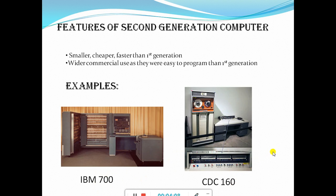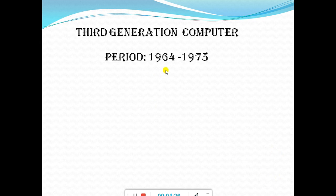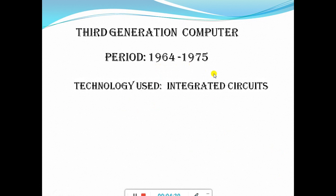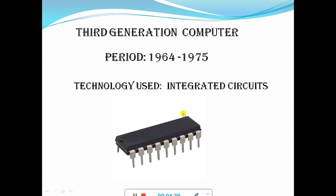You can see the size decreased compared to the first generation computer, and it is also faster. Now let us see the third generation computer. The third generation computer falls in the time period of 1964 to 1975. Integrated circuits were the technology used. An integrated circuit is a set of electronic circuits on one small flat piece of semiconductor material, normally silicon — also known as a chip. When many transistors are put together, they form an integrated circuit.